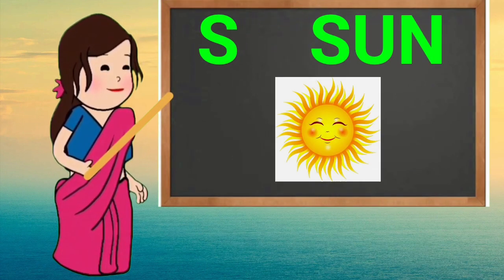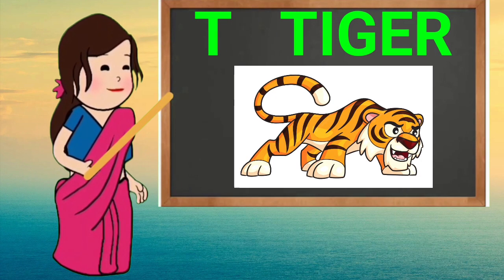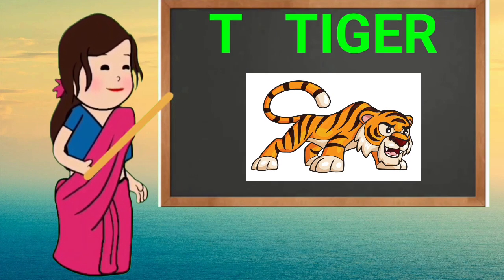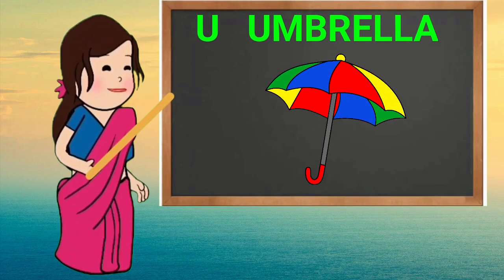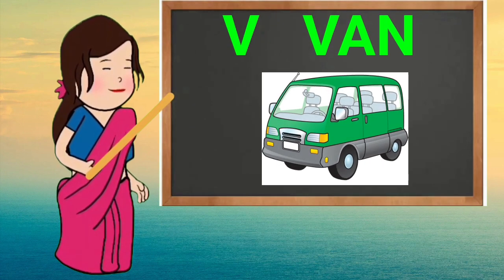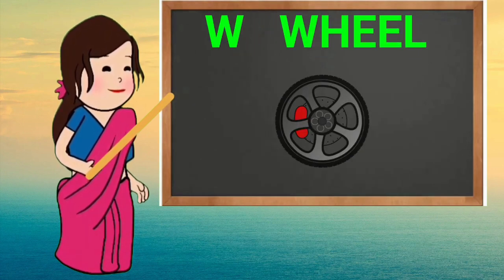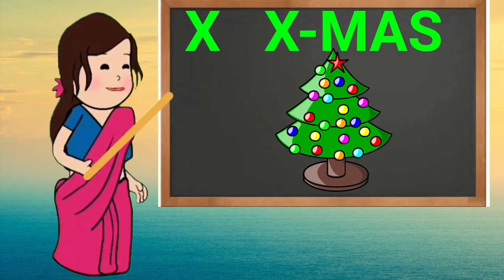S for sun, T for tiger, U for umbrella, V for van, W for wheel.